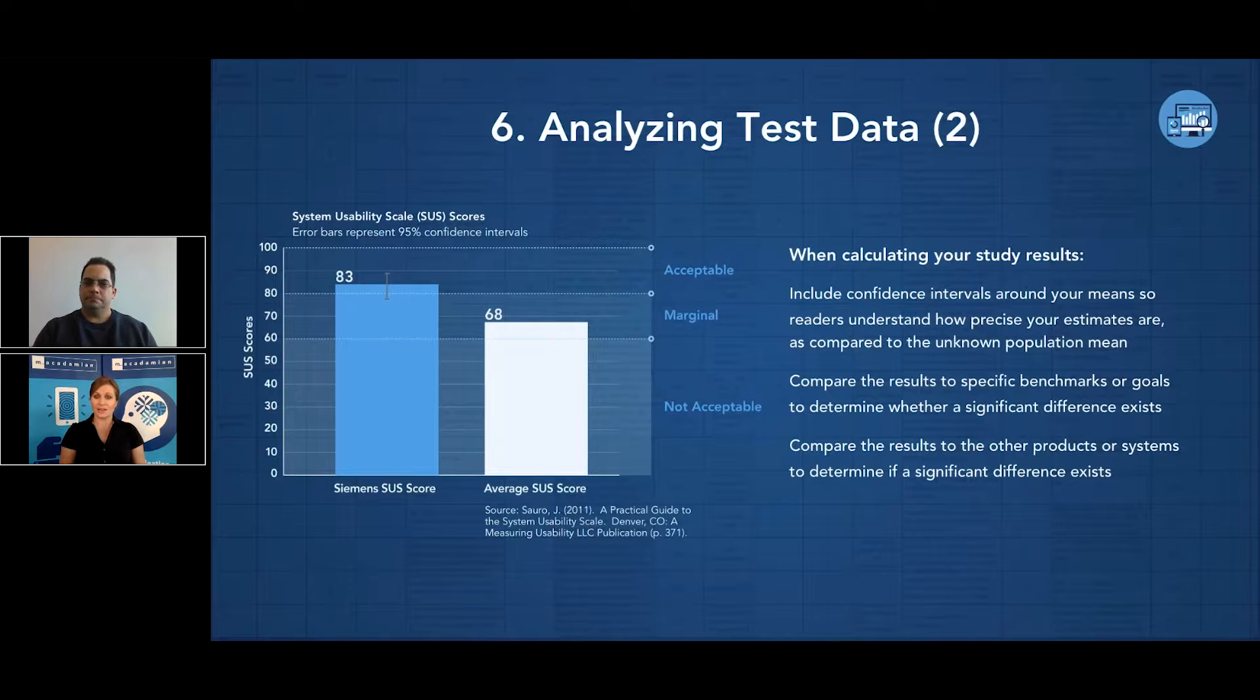Let me break this down a little bit and provide you with an example. Here we have a result from our test that compares the System Usability Scale score for the Siemens system involved in our test to the average system usability score. Note here that the confidence interval around the score of 83 out of 100 with the little gray error bars means that we can be 95% confident that the true score is between 77 and 89, which is well above the average industry score of 68 out of 100.